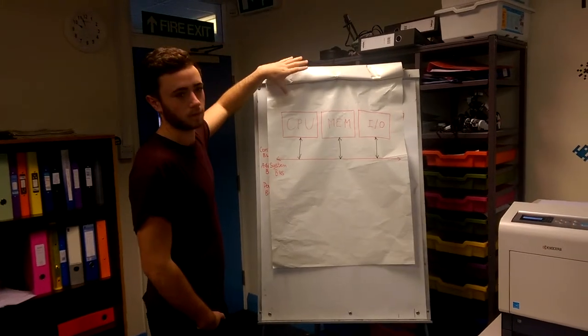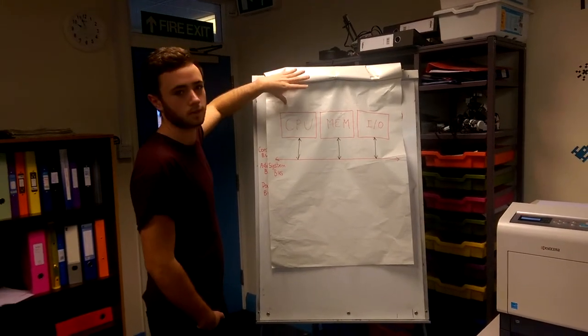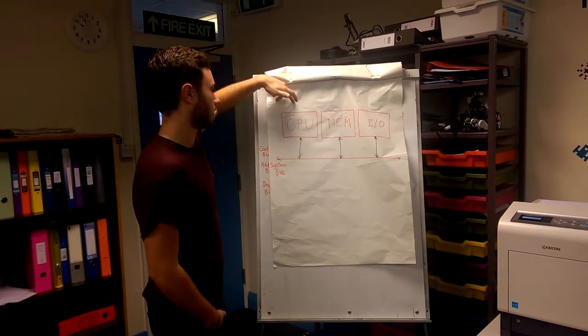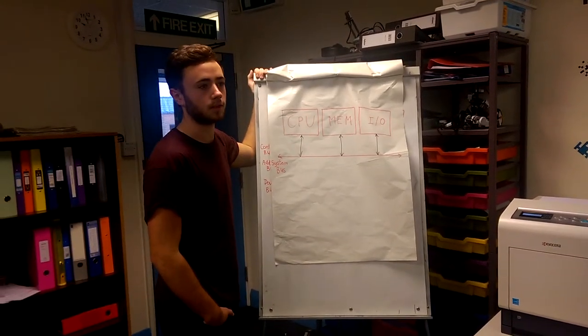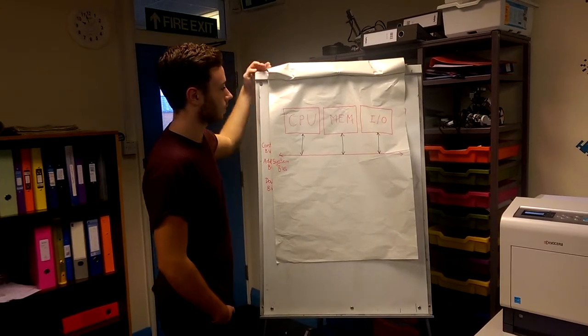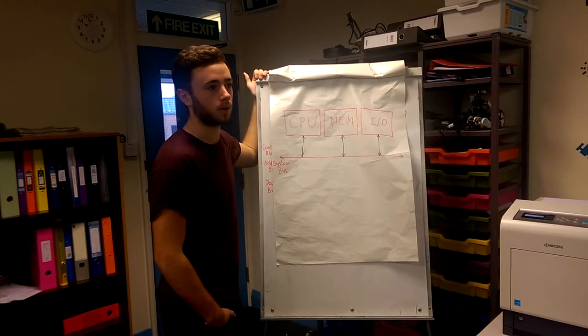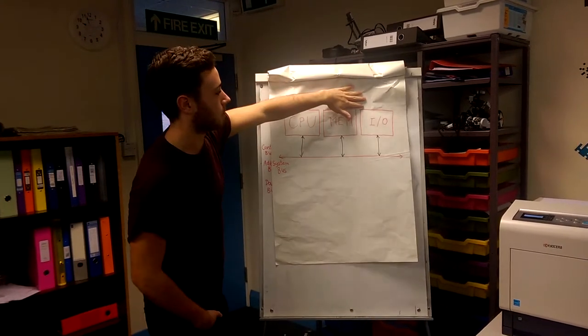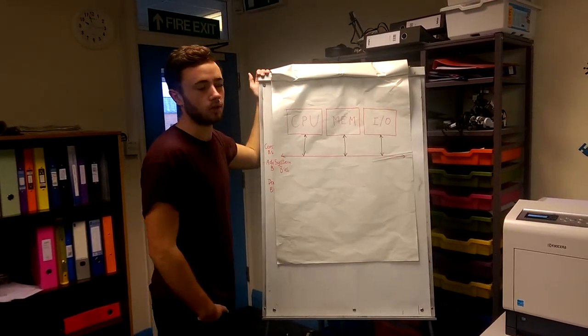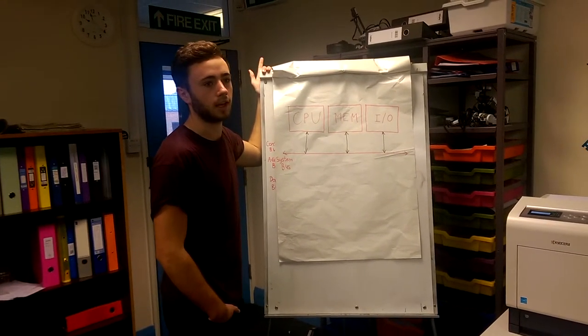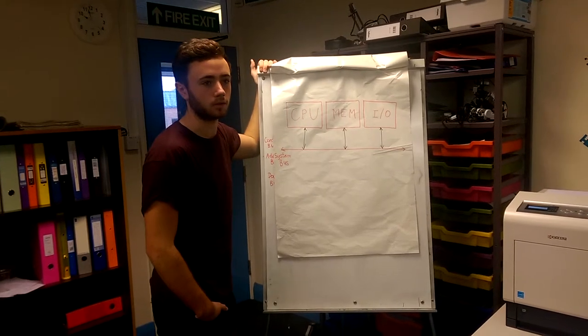The main components in the computer that it connects are the CPU, the memory, and the input output controls. The CPU is the central processing unit which basically makes all the decisions within the computer. The memory is used to store data either temporarily or permanently. The input output control is used to take data from a monitor, keyboard, and all sorts of devices.